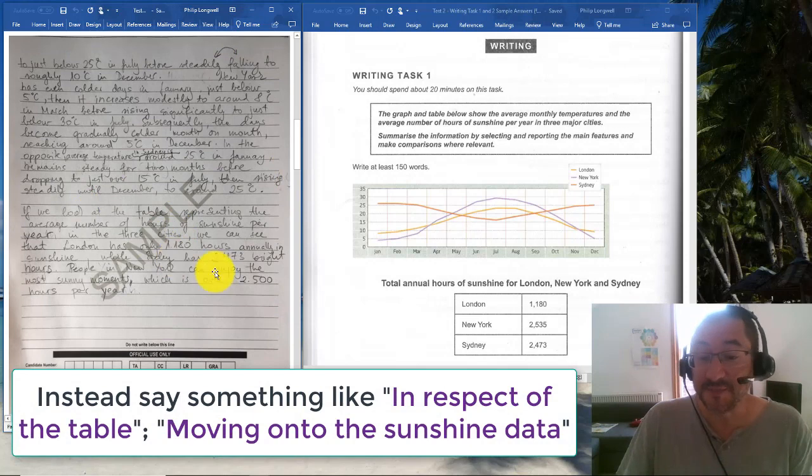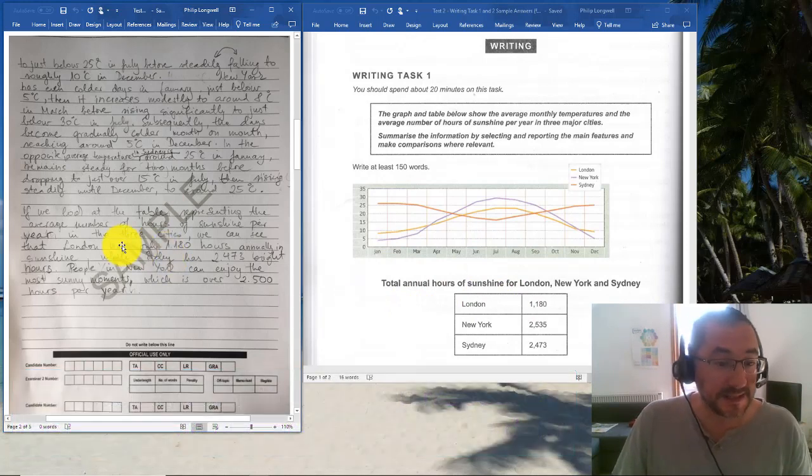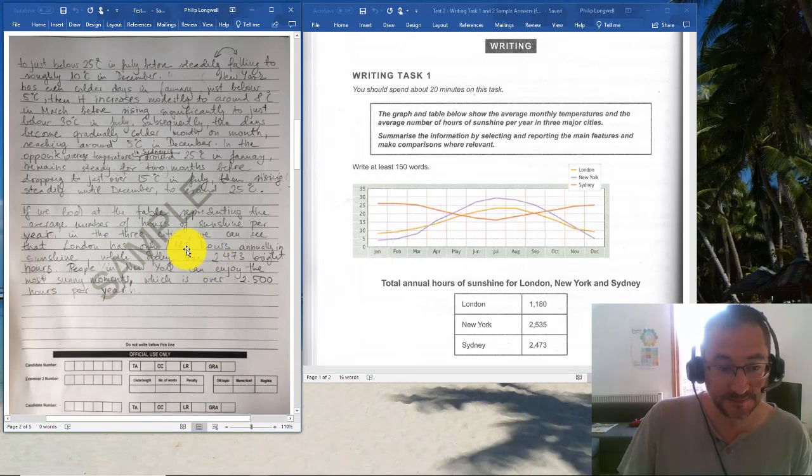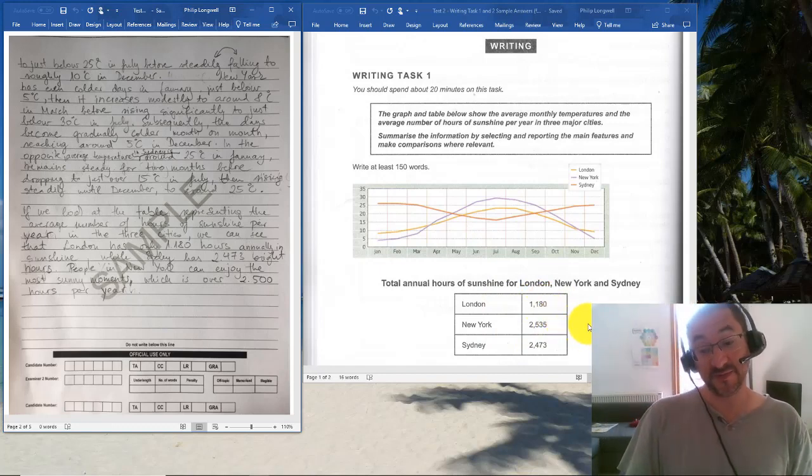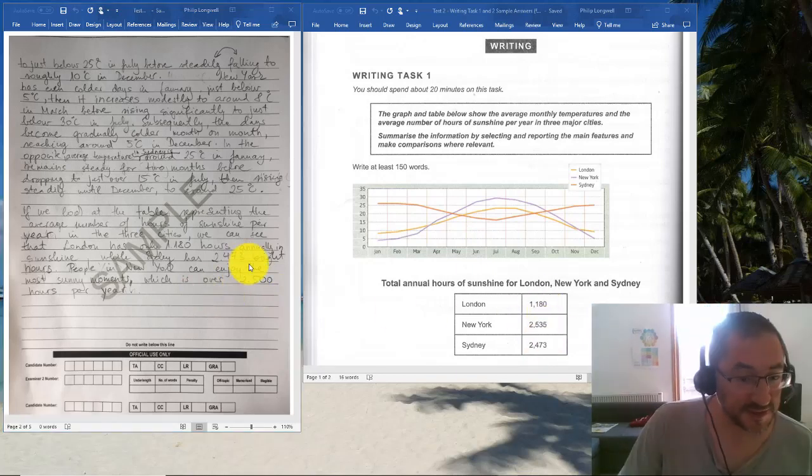You can just say "moving on to the table," "in respect of the table," "in respect of the number of hours of sunshine." In the three cities we can see that London has only 1,180—we know it's the least of the three, but we don't know if it's very low in terms of other cities. We just don't know that. The only information we've got is that it's less than half of the total number of hours for Sydney and even more of a difference between London and New York.